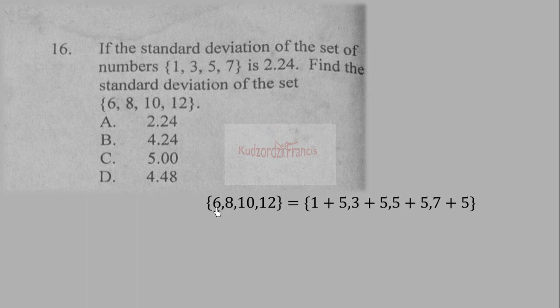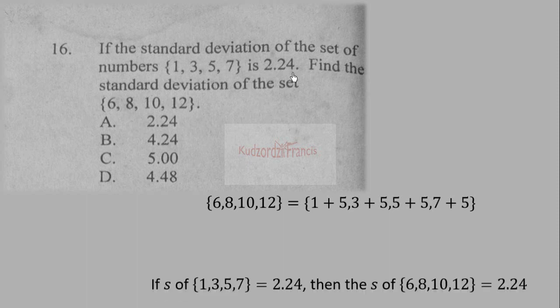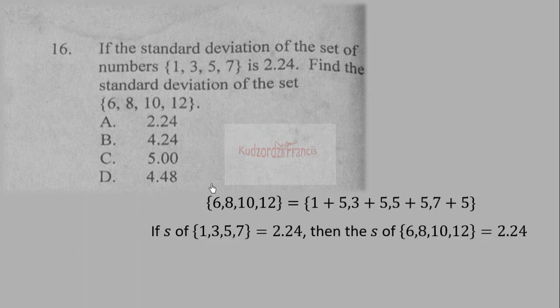Comparing the two sets, the first is {1, 3, 5, 7} and the second is {6, 8, 10, 12}. We can see that we simply added a constant of 5 to each element. Because we added a constant, the standard deviation does not change. Standard deviation is a measure of variation — all elements move the same distance from the mean, so there is no change.